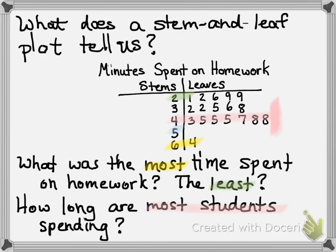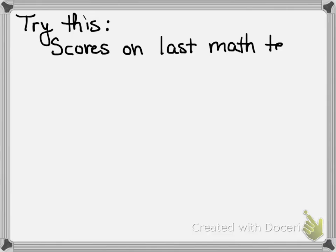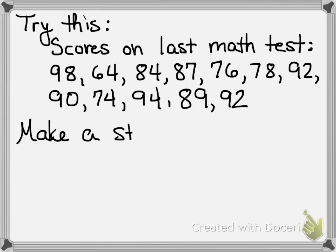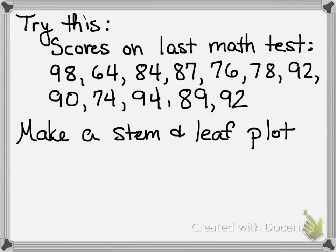Let's try making your own. These are scores on the last math test. We want to create a stem and leaf plot using these scores. Step one: list the numbers in order from least to greatest. Step two: make your stems, least to greatest. Step three: add your leaves, least to greatest for each stem. Last step: add a key. Go ahead and try this — pause the video and we'll come back in just a second and I'll show you how I made mine.